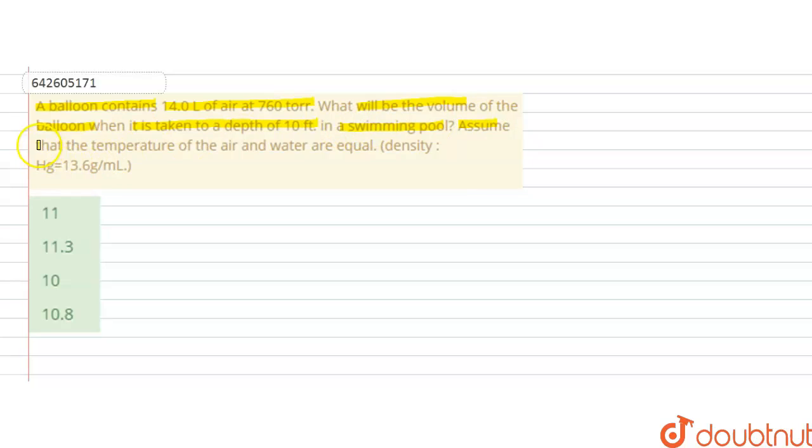Assume that the temperature of the air and water are equal, and density of mercury is given 13.6 gram per m. So in this question, we are given a balloon that is having 14 litres of air at 760 torr. We have to calculate the volume of a balloon when it is taken to a depth of 10 feet, and it is given that the temperature of air and water are equal.